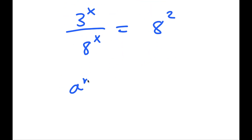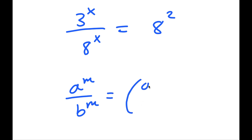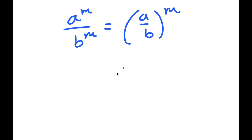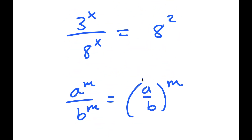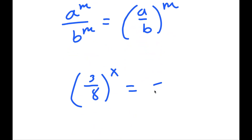Now if I have something in the form a to the power of m over b to the power of m, this is equal to a over b to the power of m. So I get 3 over 8 to the power of x is equal to 8 to the power of 2.